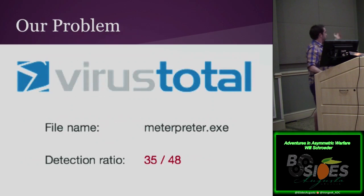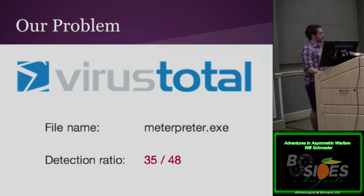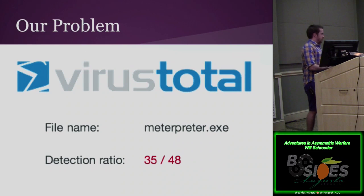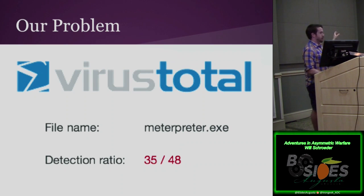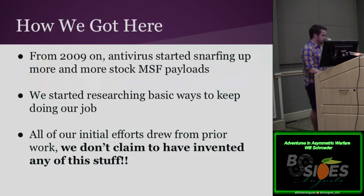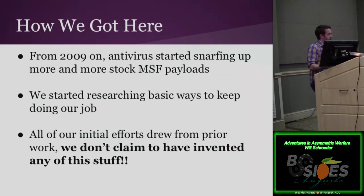Our specific problem is VirusTotal. A few years ago, people started noticing that the stock stagers for Metasploit interpreters started getting caught by antivirus solutions. The big problem, as Chris mentioned, is that AV vendors caught up to pen testing tool sets because they're open source, but they're still doing a poor job of catching professional malware. This is a stock interpreter stager generated by MSF — antivirus started snagging more and more of the stock MSF payloads.